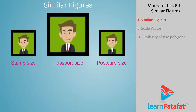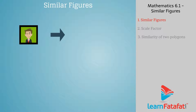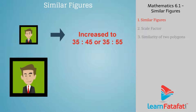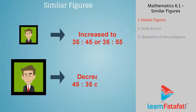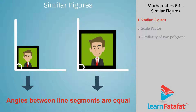For stamp size, passport size, and postcard size photographs, a photographer takes a photograph on a 35 mm small size film and then enlarges it to a bigger size of 45 mm or 55 mm. The line segment of the smaller photograph is increased in ratio 35 mm to 45 mm or 35 mm to 55 mm. The line segment of the bigger photograph is decreased in ratio 45 mm to 35 mm or 55 mm to 35 mm. Angles between any pair of corresponding line segments in the two photographs of different sizes are always equal.